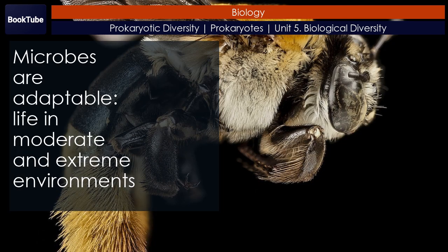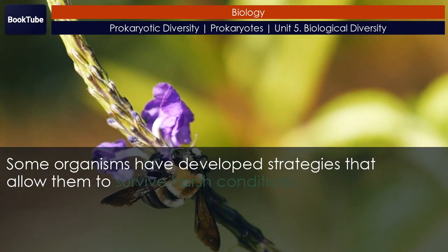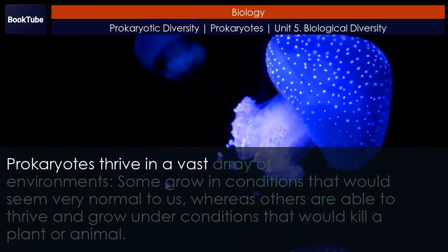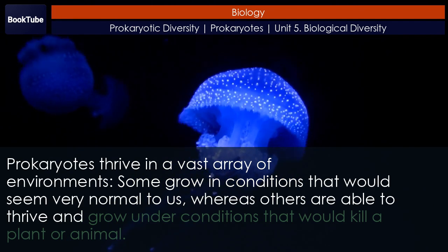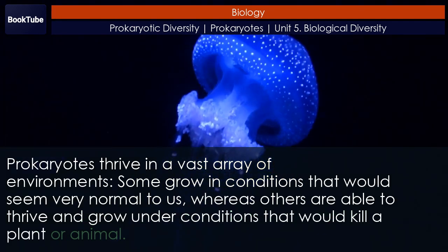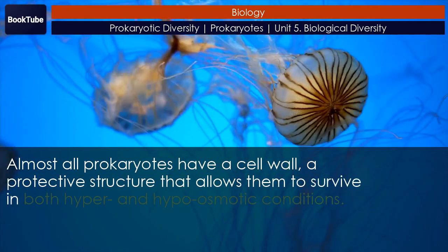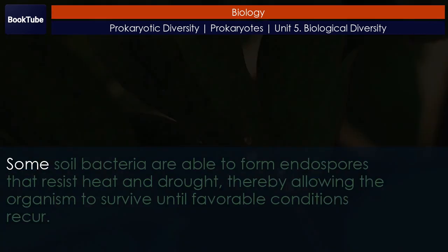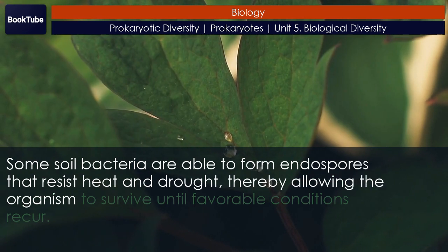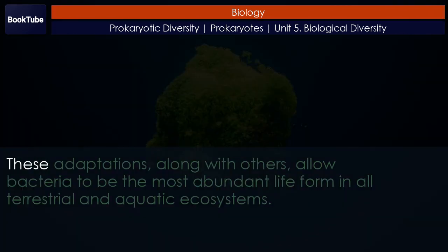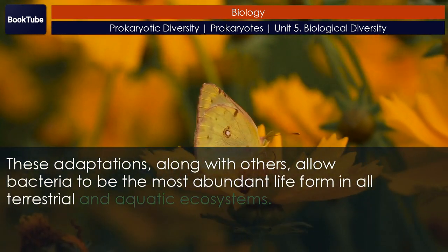Microbes are adaptable: life in moderate and extreme environments. Some organisms have developed strategies that allow them to survive harsh conditions. Prokaryotes thrive in a vast array of environments. Some grow in conditions that would seem very normal to us, whereas others are able to thrive and grow under conditions that would kill a plant or animal. Almost all prokaryotes have a cell wall — a protective structure that allows them to survive in both hyper- and hypoosmotic conditions. Some soil bacteria are able to form endospores that resist heat and drought, thereby allowing the organism to survive until favorable conditions recur. These adaptations allow bacteria to be the most abundant life form in all terrestrial and aquatic ecosystems.